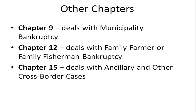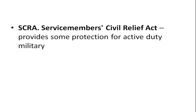A couple of other chapters you may not be familiar with: Chapter 9 deals with municipality bankruptcy. Chapter 12 deals with family farmer or family fisherman bankruptcies. Chapter 15 deals with ancillary and other cross-border cases. The SCRA, or the Service Members Civil Relief Act, provides some protection for active-duty military. If a family member is deployed overseas and the family is having trouble making ends meet, there's protection while that person is on active duty. The purpose is that we don't want our military sitting in a combat zone worrying about whether their spouse is going to lose the house — we want them focused solely on protecting our country.